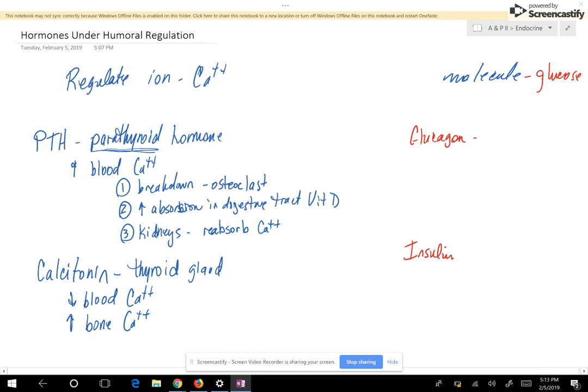Glucagon is going to be secreted by the alpha cells of the pancreas. It is going to increase blood glucose. It will be secreted in between meals because it's going to break down liver glycogen. You might recall that starch is the storage form of glucose in plants. Glycogen is the storage form of glucose in animals. So it's going to break down the liver stores of glycogen in between meals.